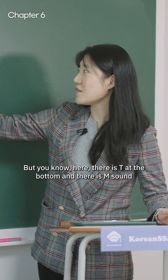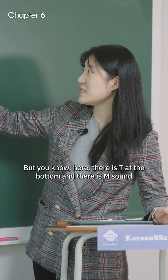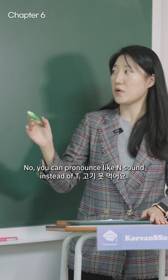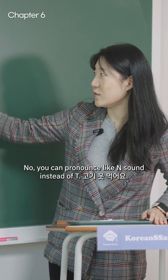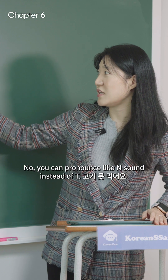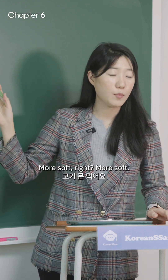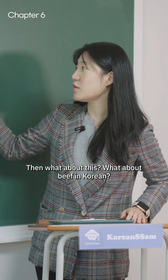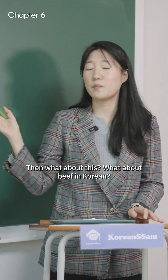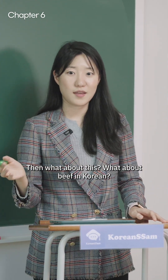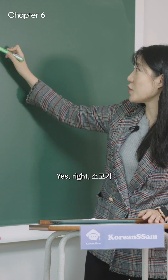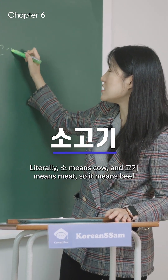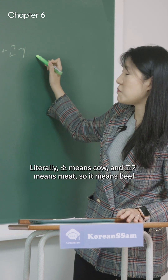When there is a T at the bottom and there is an M sound, you pronounce it more softly: 고기 못 먹어요. Then what about beef in Korean? 소고기. 소 literally means 'cow,' and 고기 means 'meat,' so it means 'beef.' And pork? 돼지 — that literally means 'pig.' If you attach 고기, it becomes 돼지고기, which means pork.